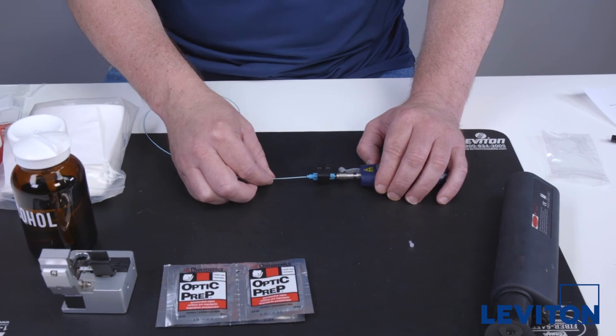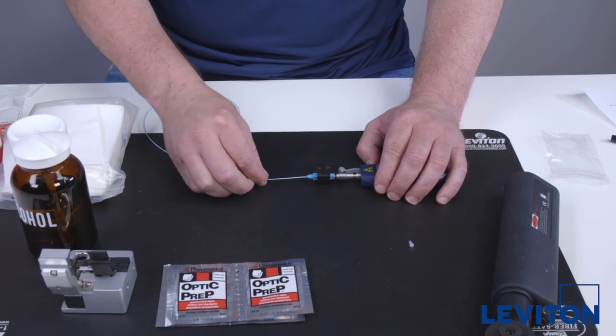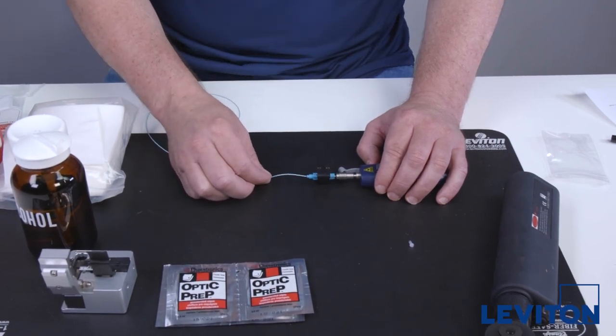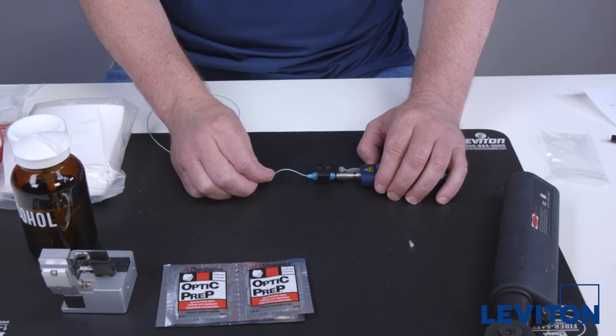Insert the fiber so it bows slightly. This ensures the cleaved fiber end fully mates and there are no gaps. Maintain the bow until the cams are released and locked in place.